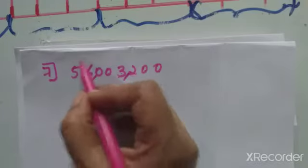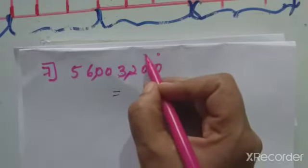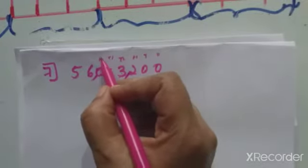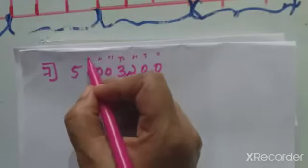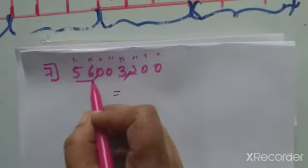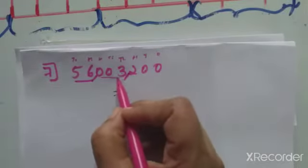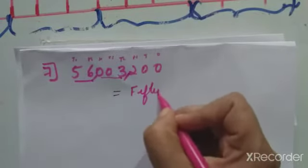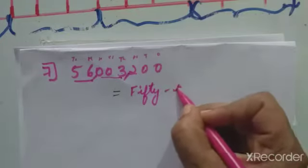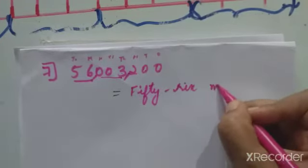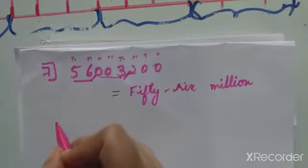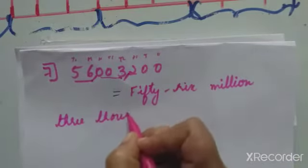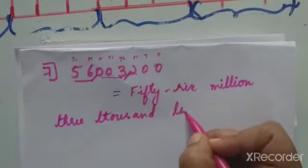Reading the positions from right: ones, tens, hundreds, thousands, ten-thousands, hundred-thousands, million, ten-million. So the number is 56 million, 3,200. Written in words: fifty-six million, three thousand, two hundred.